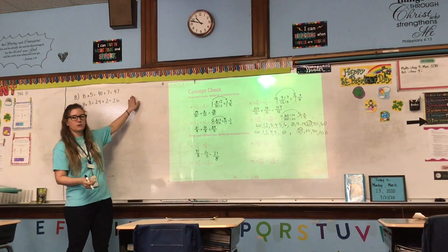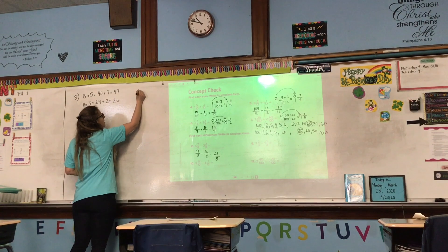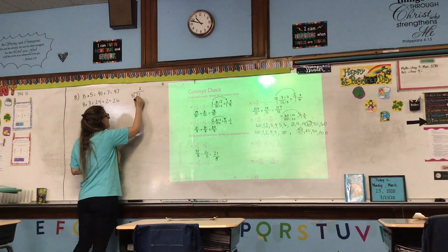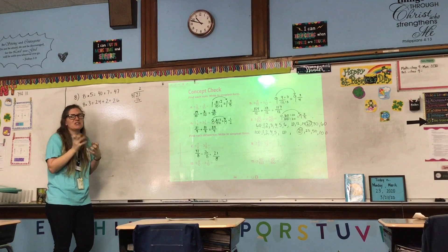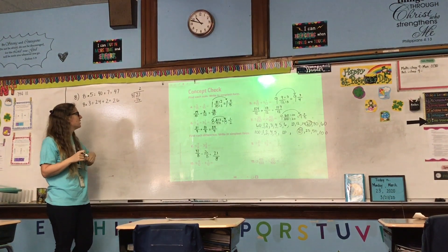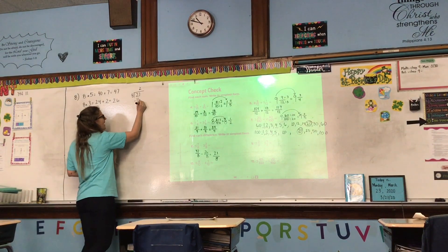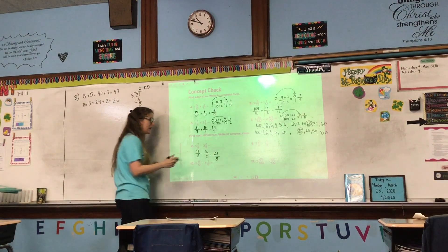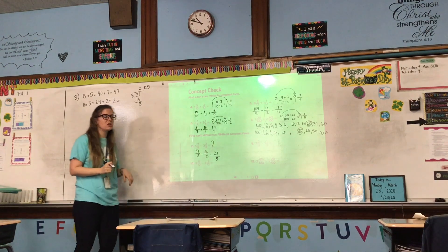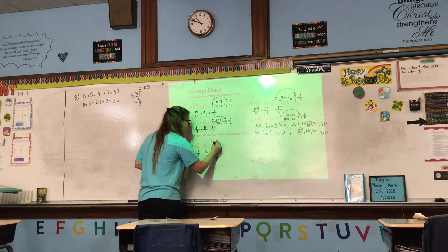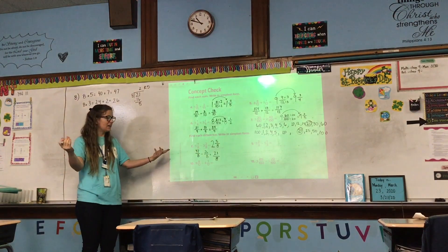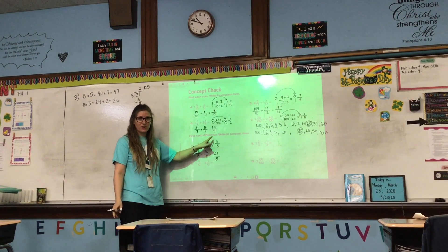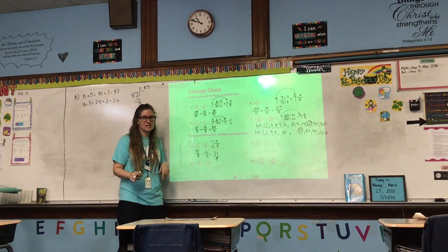We can't leave it as an improper fraction, so let's go to our separate sheet of paper and do division. 21 divided by 8: 8 goes into 21 twice. 2 times 8 is 16. 21 minus 16 is 5. So the answer is 2 remainder 5. Whole number is 2, numerator is 5, denominator stays 8. We finally come to one we do not have to simplify because 5 is prime and is not a factor of our denominator, so that means it's in simplest form.